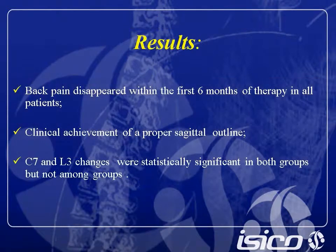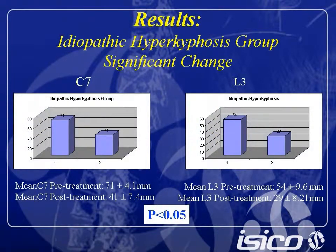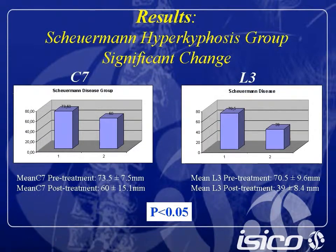We performed statistical analysis using chi-square tests. Results: we found that back pain disappeared within the first six months of therapy in all patients. Clinical reconstruction of a proper sagittal outline and C7 and L3 changes were statistically significant in both groups, but not between groups. For the idiopathic hyperkyphosis group, we observed a significant decrease in C7 and L3, and also for the Scheuermann's hyperkyphosis group, we observed a significant decrease in plumb line distance.